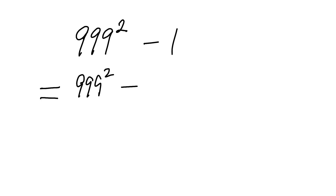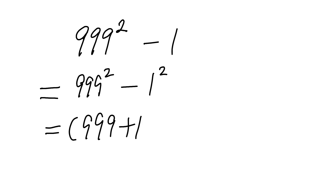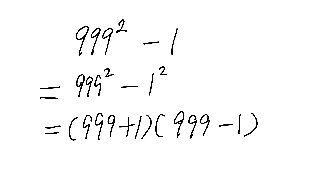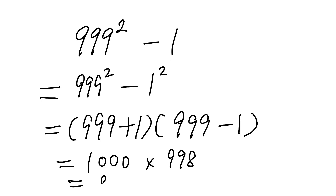1 equals 1 to the power of 2. So you can have 999 plus 1, and then 999 minus 1, and then multiply them together, which will give you the answer.